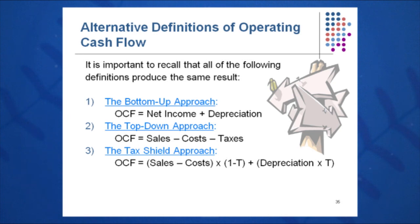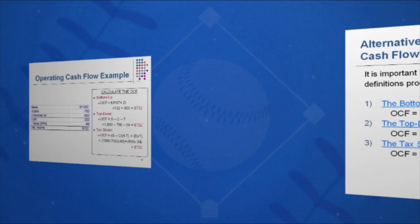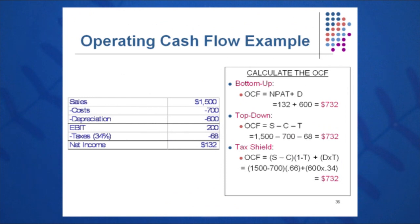The depreciation tax shield in this case is D times T. You can do a sample income statement and look at all four methods — you should come up with the same answer. Using the traditional approach on this income statement: take EBIT of 200 plus depreciation of 600 minus taxes of 68, and you should get 732.